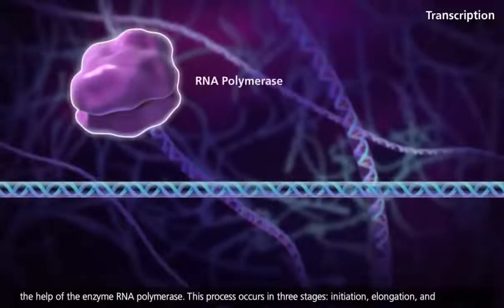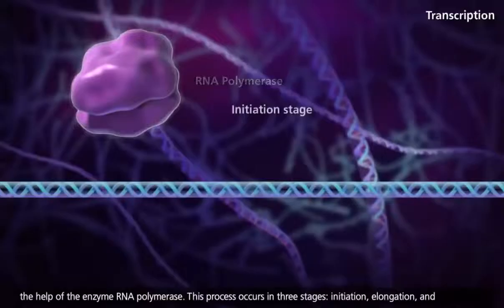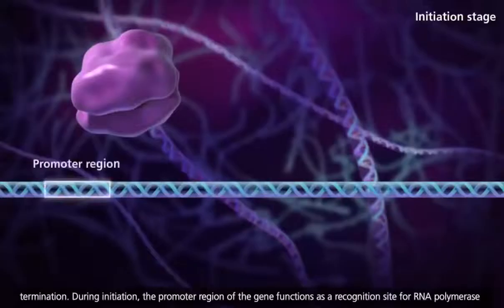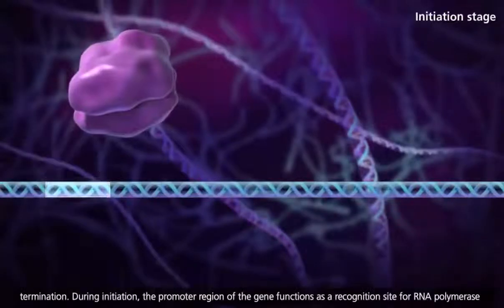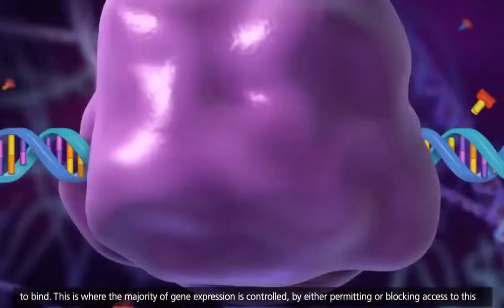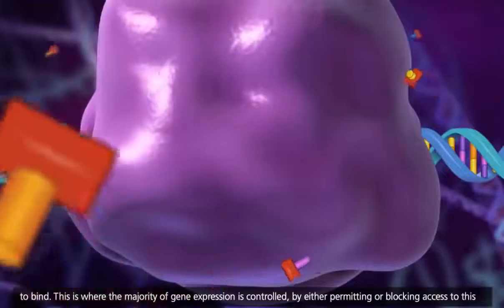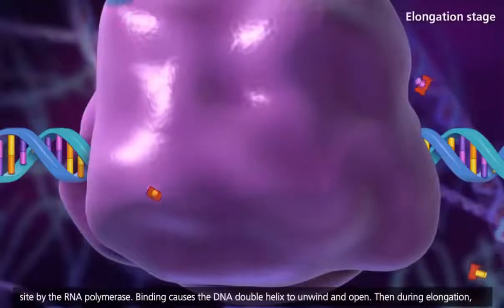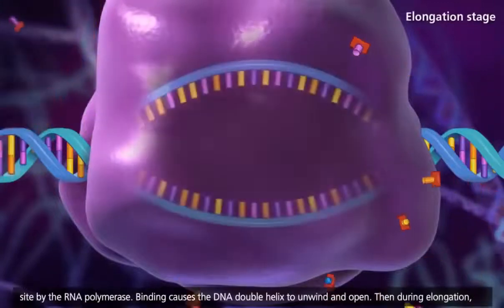This process occurs in three stages: initiation, elongation and termination. During initiation, the promoter region of the gene functions as a recognition site for RNA polymerase to bind. This is where the majority of gene expression is controlled, by either permitting or blocking access to this site by the RNA polymerase. Binding causes the DNA double helix to unwind and open.